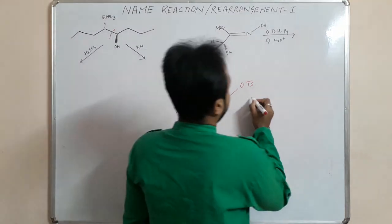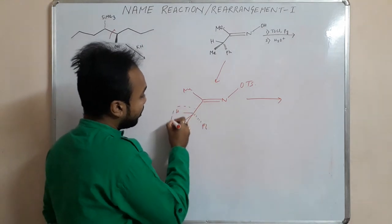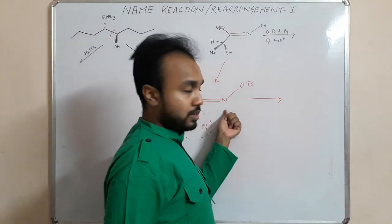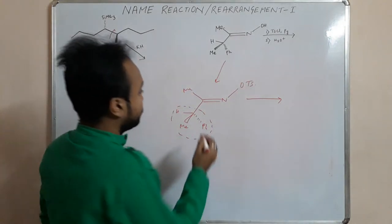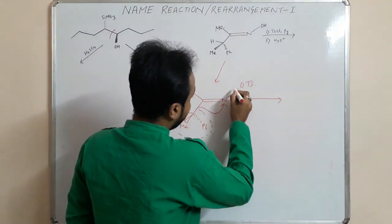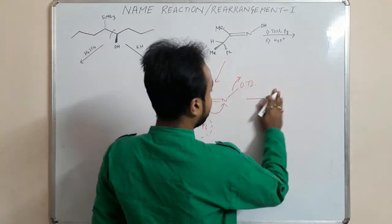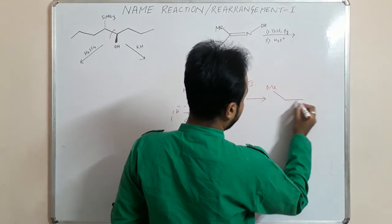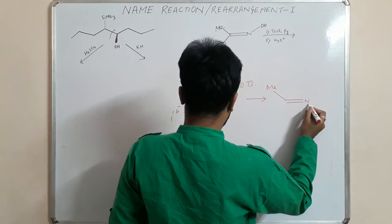What happens here is the rearrangement takes place. This group will migrate, and this helps the OTs to leave the system. If this group migrates, the whole group migrates, then OTs will leave. We are getting N and getting this one.